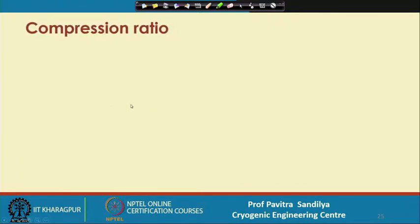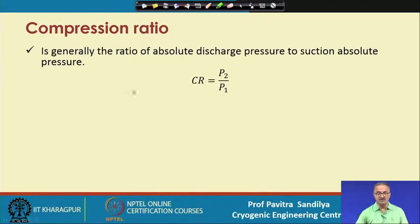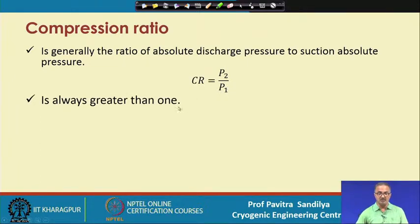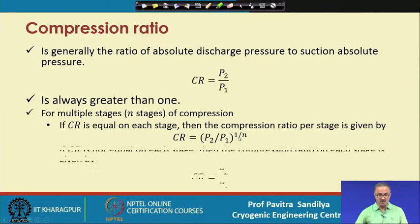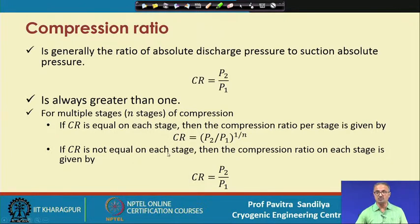The compression ratio is determined as the ratio of the absolute discharge pressure to the absolute suction pressure, and is always greater than 1 since P2 is always greater than P1. When we have multiple stages with n stages and equal compression ratio CR on each stage, the compression ratio per stage is (P2/P1)^(1/n). If CR is not equal across all stages, we find the compression ratio for each stage separately.